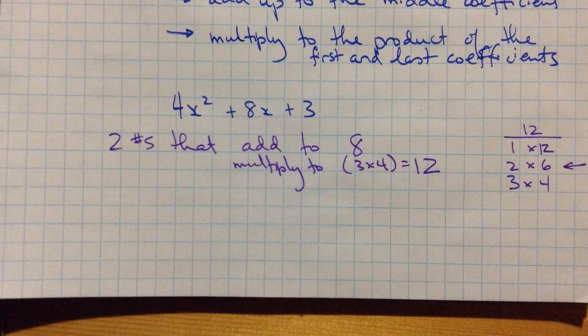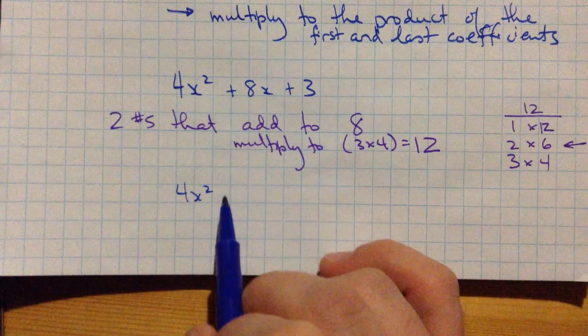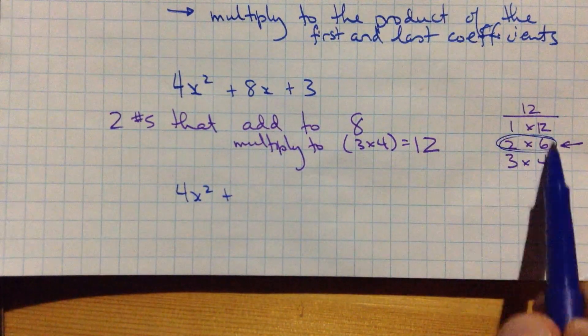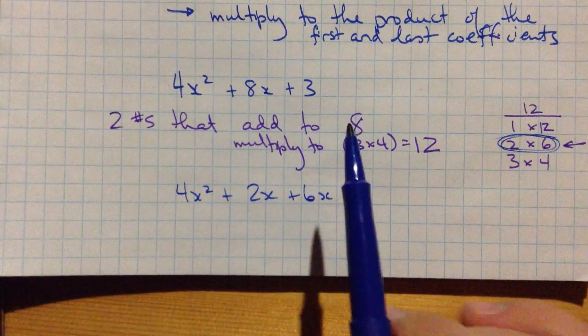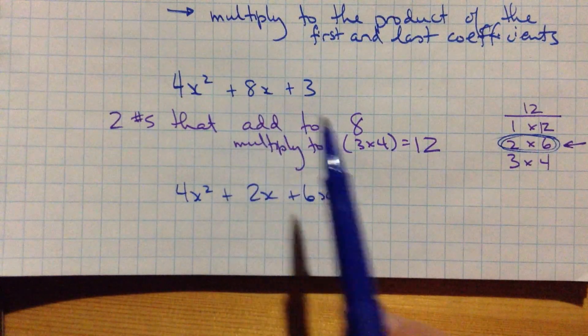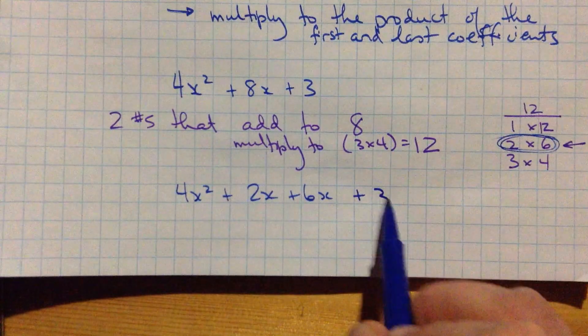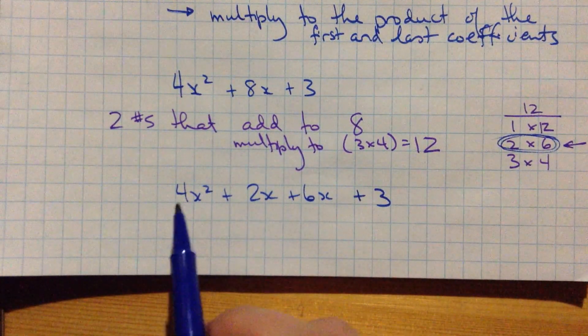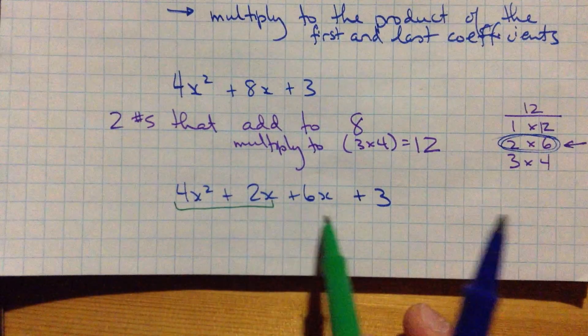Alright, that's pretty good. So let's rewrite our expression, 4x squared plus, instead of 8x, we're going to use these two values, 2x plus 6x. So this is called decomposition, we're decomposing, splitting this value apart into two separate terms. And then, this is why we did our common factoring. This is really important now, we're going to start to common factor here and here.